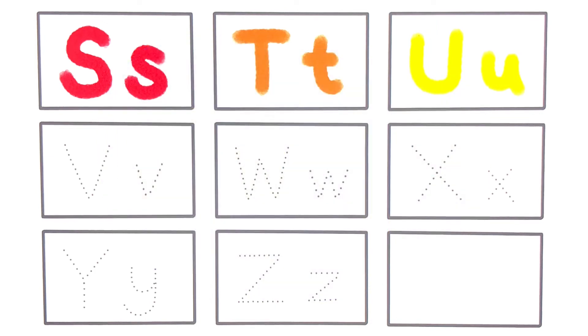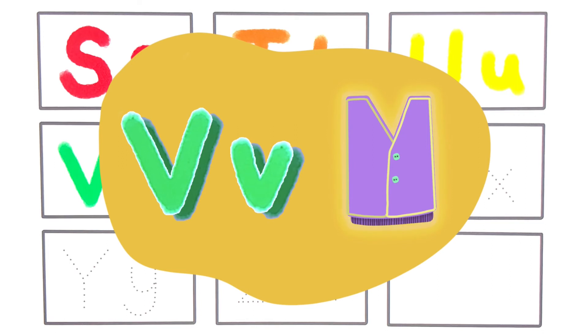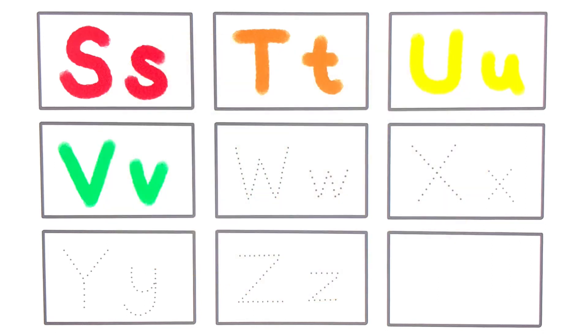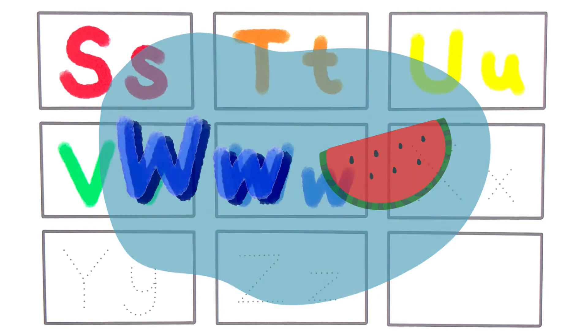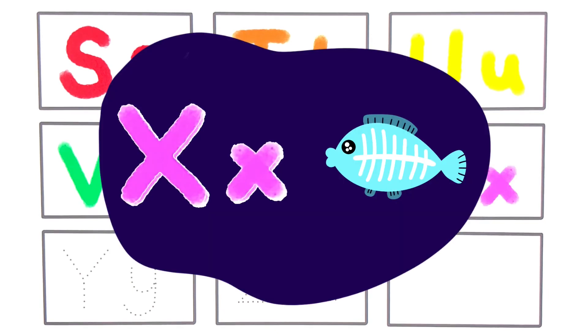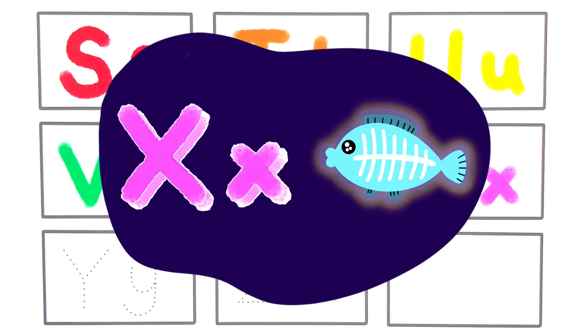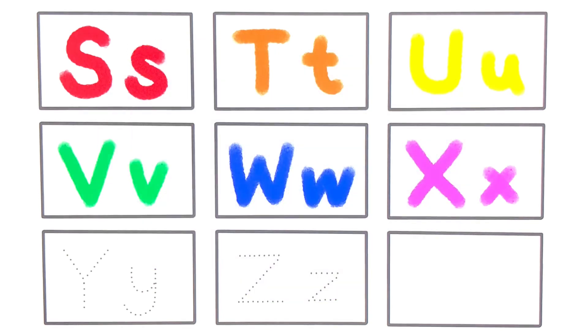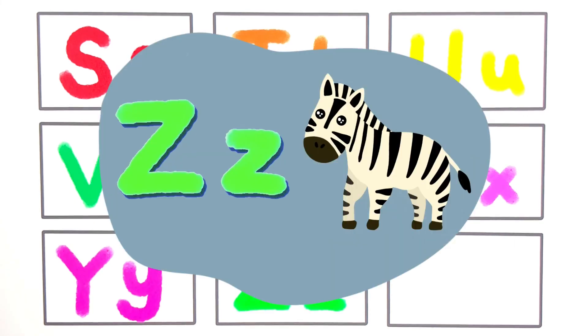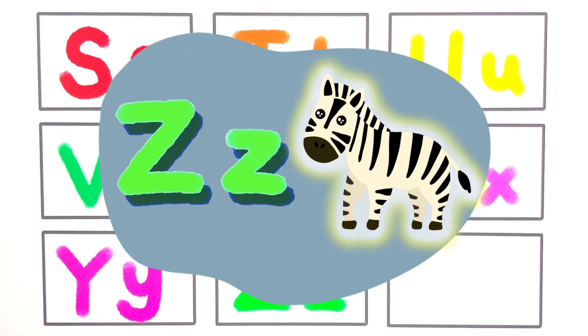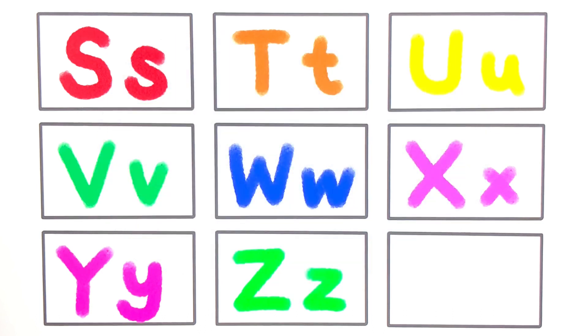A, B, C, D, E, F, G. V for vest. H, I, J, K, L, M, N, O, P, Q, R, S, T, U, V, W, X, Y, and Z. X for X-rayfish. Now I know my ABCs. Next time won't you sing with me. Y for yo-yo. Z for zebra.